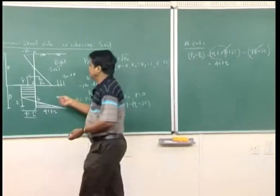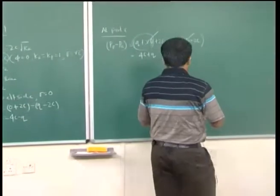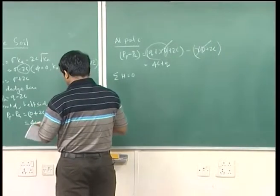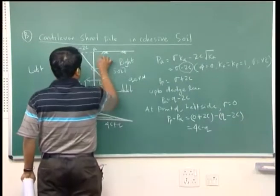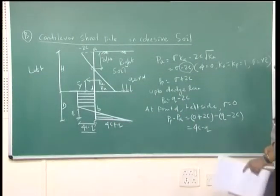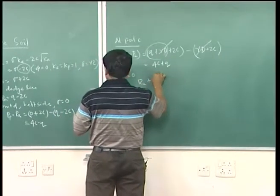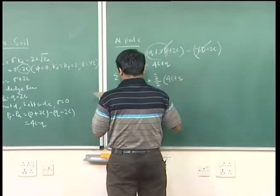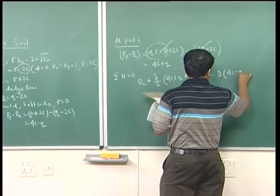The next step is the derivation to find the required embedment depth D. Taking the summation of horizontal forces equal to zero: RA + (Z̄/2)(4C + Q + 4C − Q) − D(4C − Q) = 0. This represents the total horizontal equilibrium condition for the entire body.